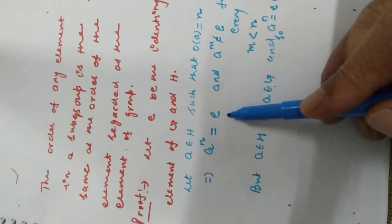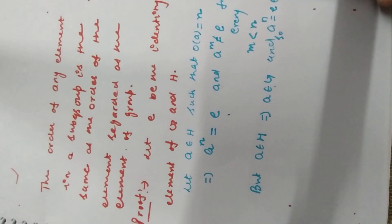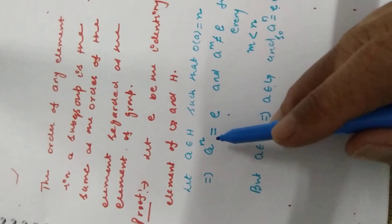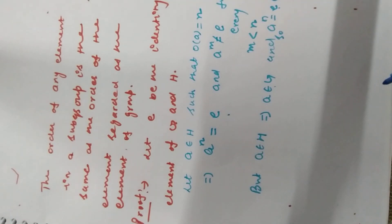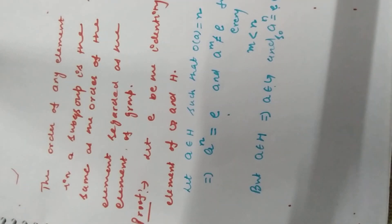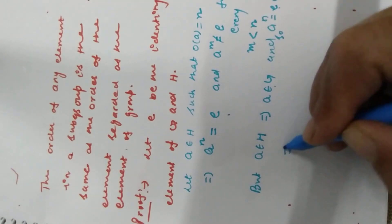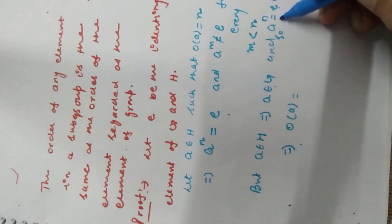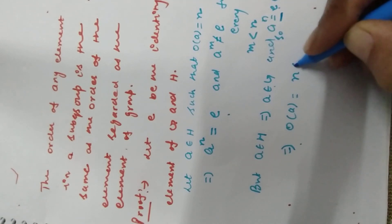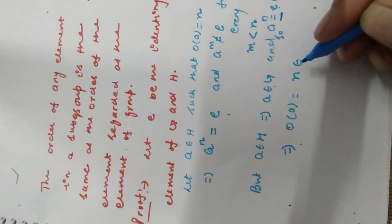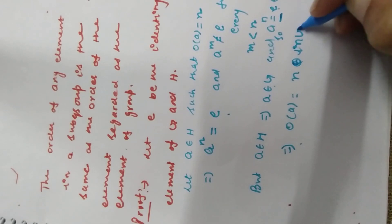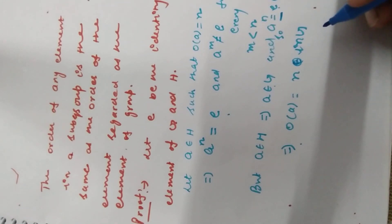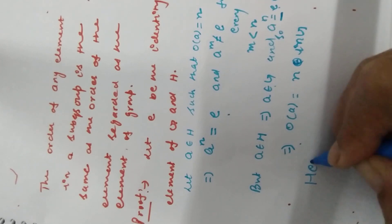Kyunki a raised to power n is equal to e hai, aur e belongs to G. To it implies order of a is equal to n — is statement se, order of a is equal to n in G. Hence proved.